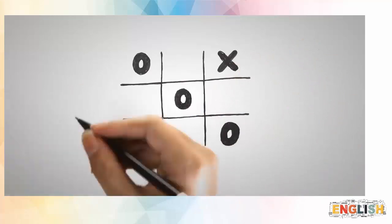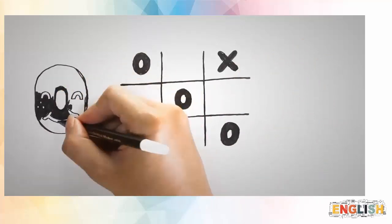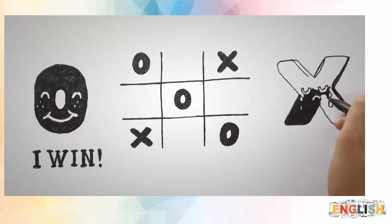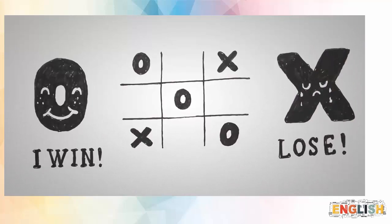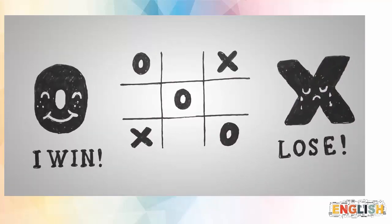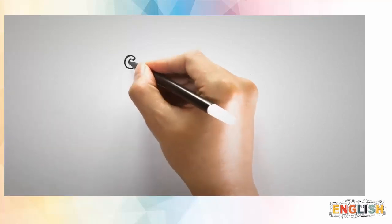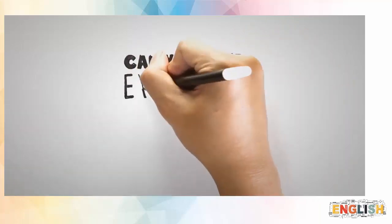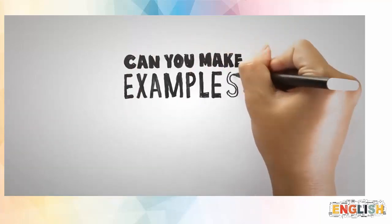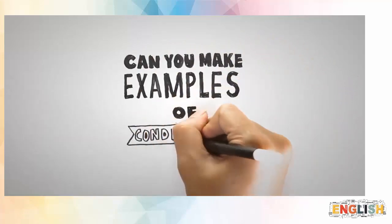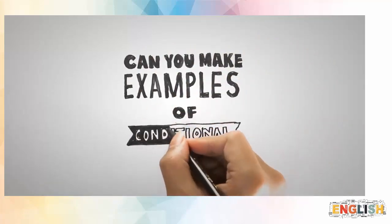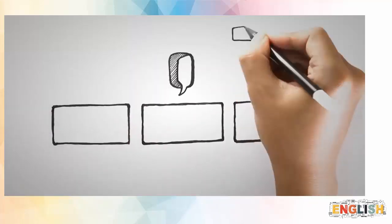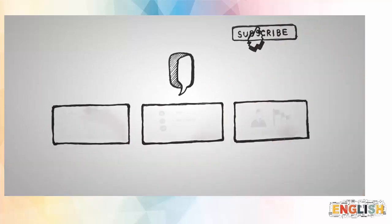Let's try another example. Let's play tic-tac-toe. If you get three crosses in a row or three O's in a row, then you win. If you can't, then you lose. These are the rules, and this is also a zero conditional. You can use zero conditional sentences for facts and rules. Write your own examples in the comment section below, and don't forget to subscribe for more English grammar tips.